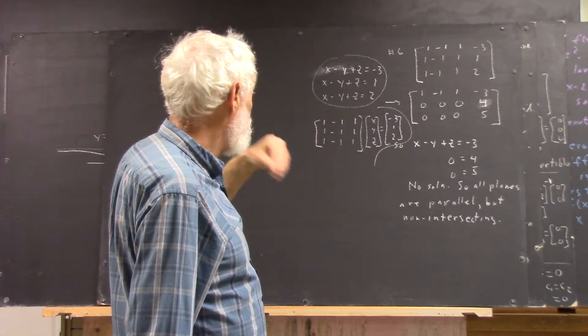Also, in pairs, no pair of these equations would be compatible. Because if you just took any two of the three and subtracted one from the other, you would get zero equals something that's not zero. Our conclusion is,